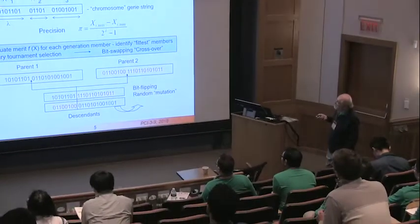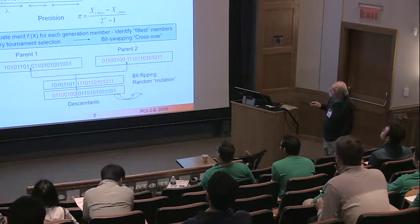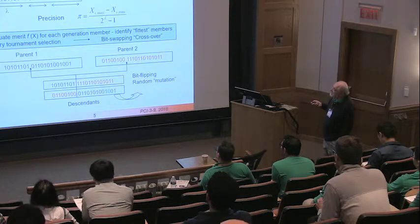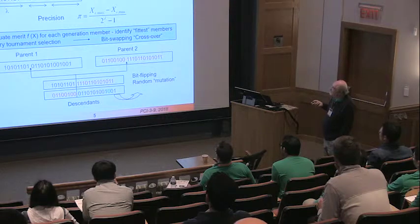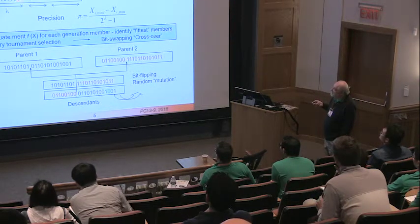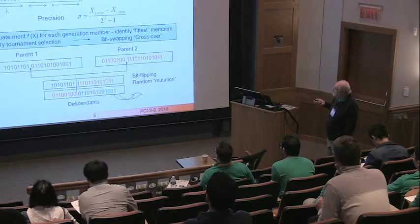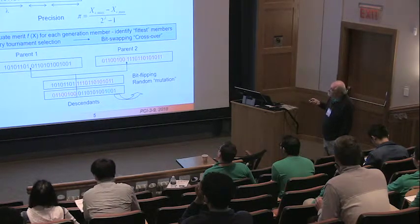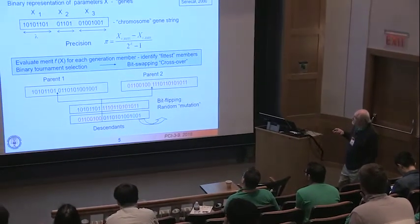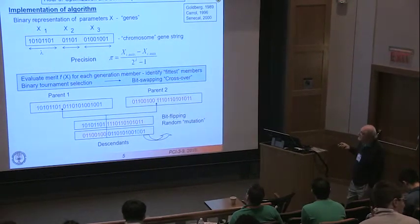Basically, what you do is represent a design by a string of zeros and ones. Each element of this continuous string corresponds to a variable — for example, boost pressure, injection pressure, or EGR rate. The precision with which you describe each variable is determined by a particular formula, so you might have fewer digits describing fuel injection pressure than other variables.